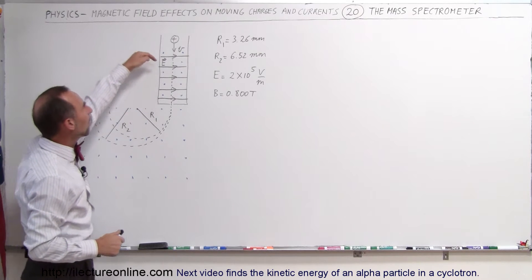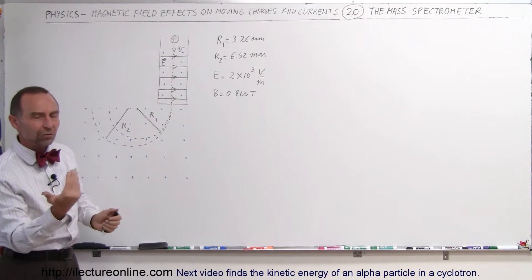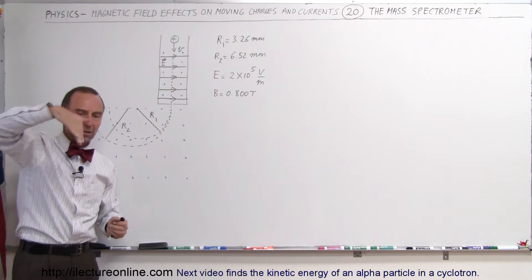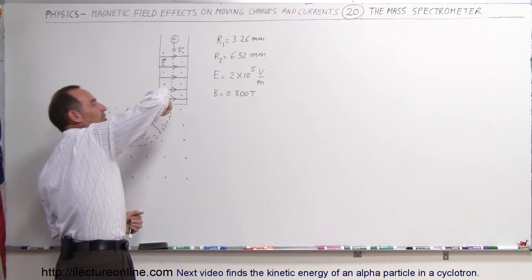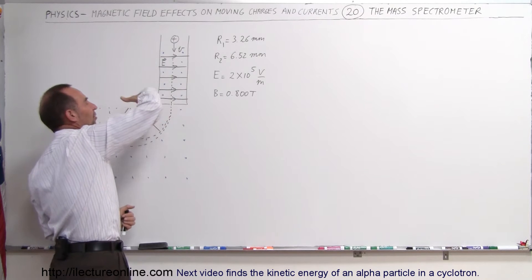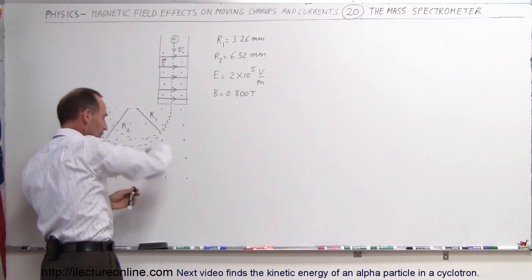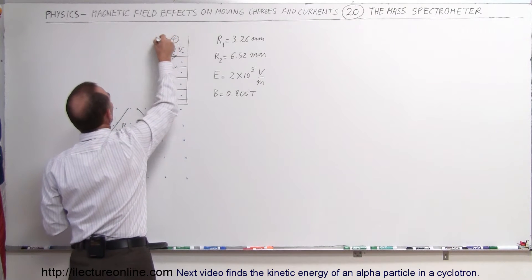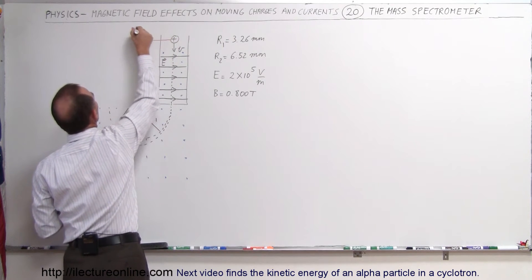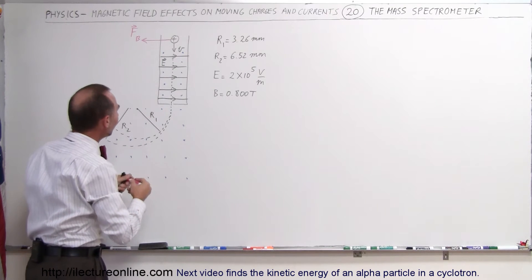Here you can see that a positive particle moving through a magnetic field which comes out of the board. Take your right hand, put your fingers in the direction of the motion of the particles, curl your fingers in the direction of the magnetic field. You can see that there's a force on the particles to the left. So we'll see a force caused by the magnetic field pushing the particles to the left.